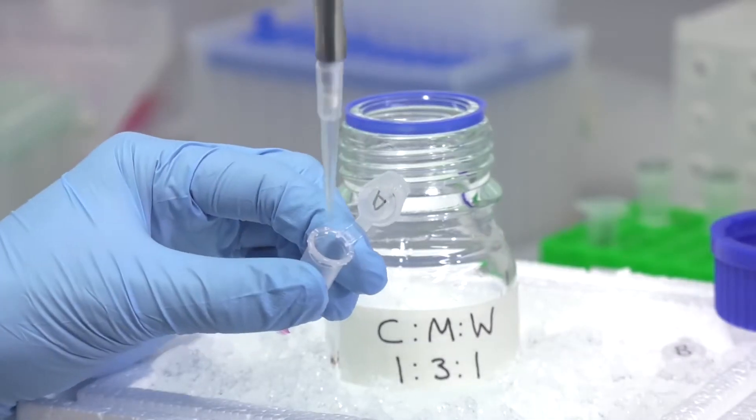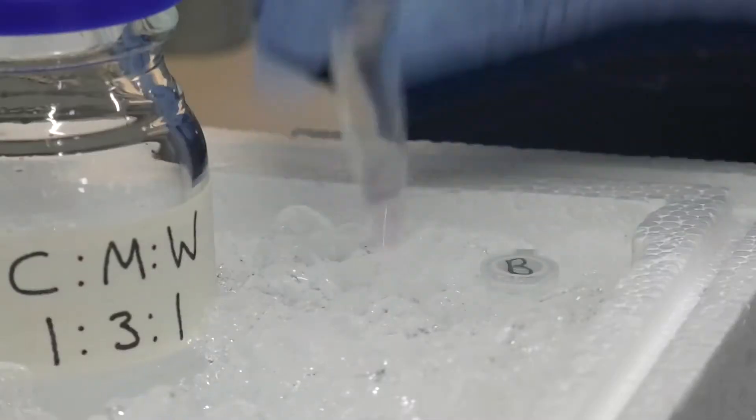Step 4. Centrifuge again to remove all supernatant. Resuspend in 200 microlitres of your extraction solvent and vortex briefly.